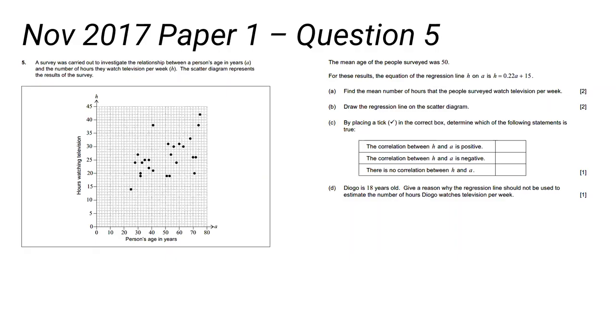The survey was carried out to investigate the relationship between a person's age in years on the horizontal axis and the number of hours they watch television per week on the vertical axis. The scatter diagram shows the results of that survey. All those dots relate to one particular person. You can see how old they are by looking down to the horizontal axis and how many hours they spent watching television looking across the vertical axis.